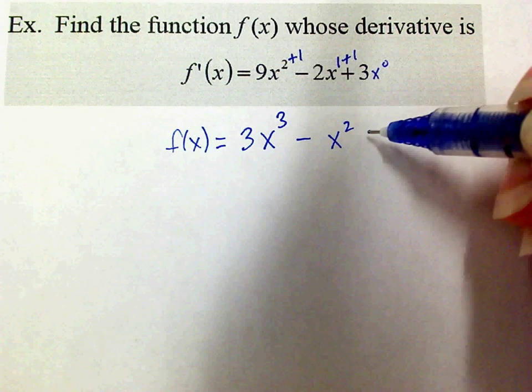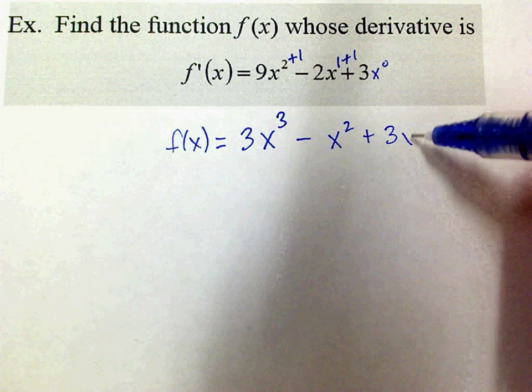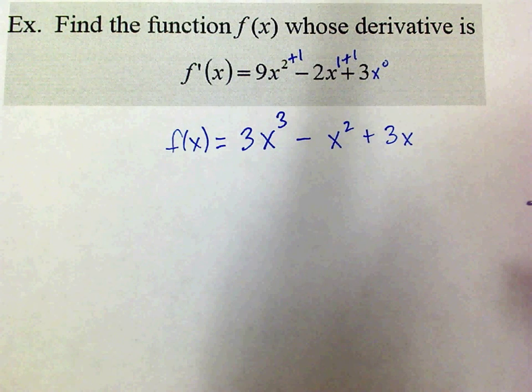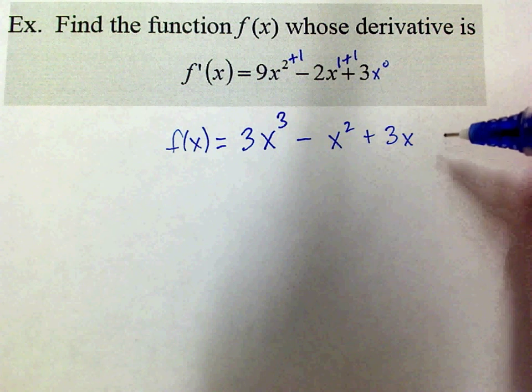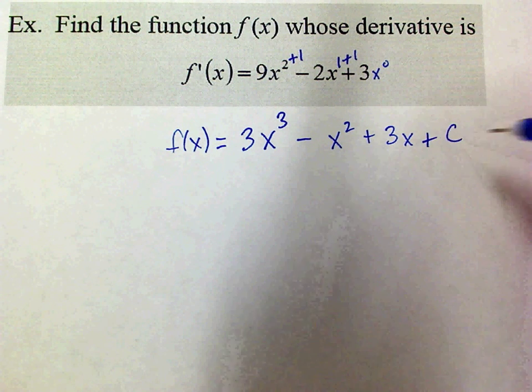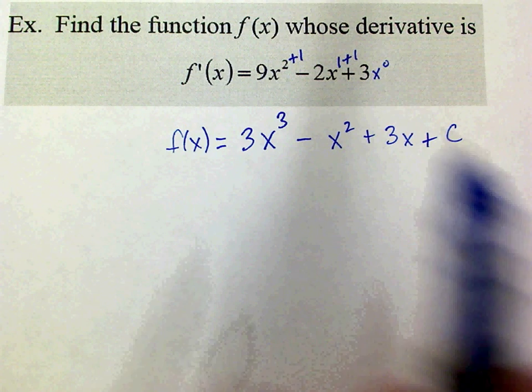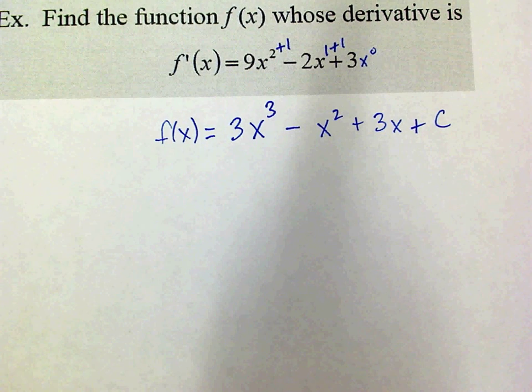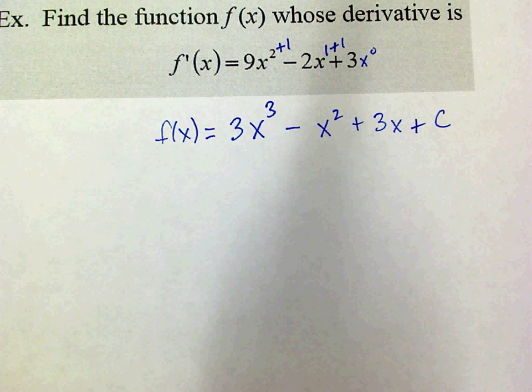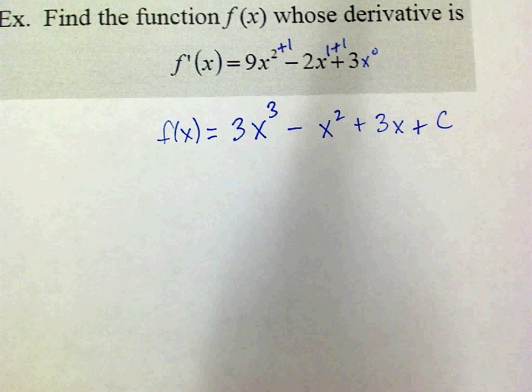The antiderivative of 3 is just 3x. And then what? I have to add some constant c, because this is only a family of functions for which this derivative occurs. I can't get specific unless they give me more information. So you have to remember plus c. We good? All right.